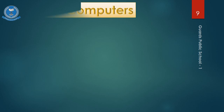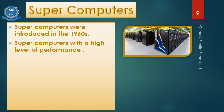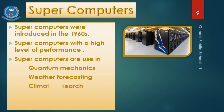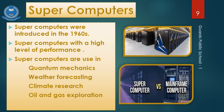The first is supercomputer. Supercomputers were introduced in the 1960s with a very high level of performance, much higher than other computers. They are very large in size and are used where high-level calculations and processing are required. Supercomputers are used in quantum mechanics, weather forecasting, climate research, and oil and gas exploration.